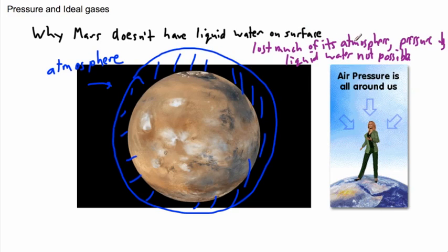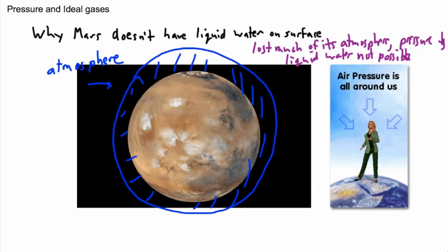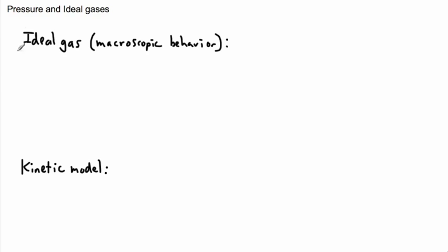Mars doesn't have liquid water on the surface anymore because it lost most of its atmosphere, so the pressure is not large enough. On Earth, we have a much thicker atmosphere, which gives us enough pressure to keep our water liquid. Now let's look at what we call ideal gases.